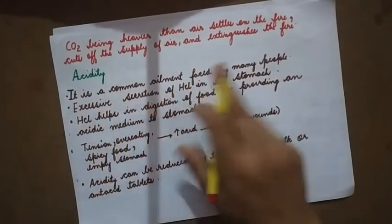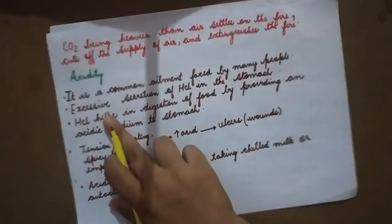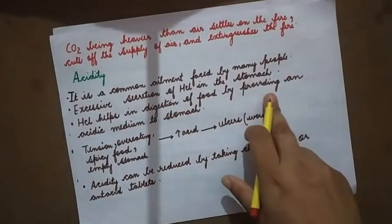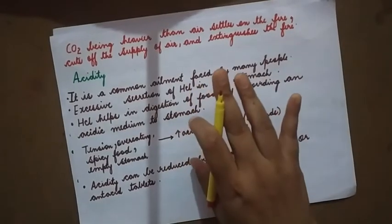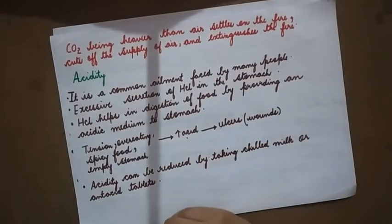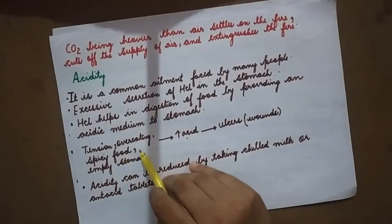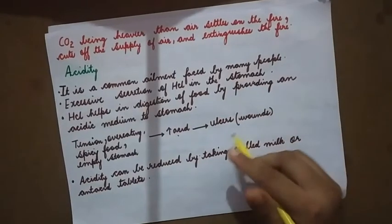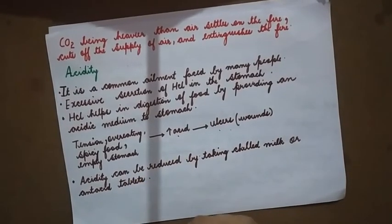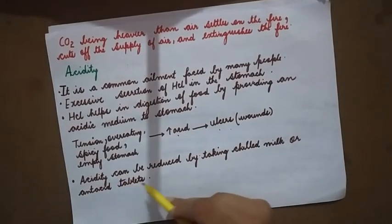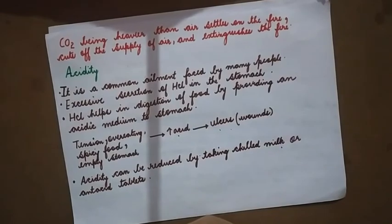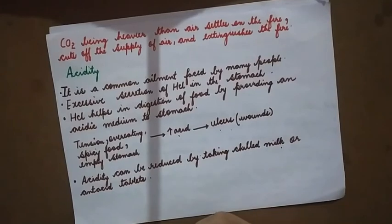Acidity is a very common problem found in many people. Excessive secretion of hydrochloric acid in the stomach causes acidity. HCl in normal amounts helps in the digestion of food by providing an acidic medium. Causes of increased acid production include tension, overeating, spicy food, or an empty stomach, which can result in ulcers. Acidity can be reduced by taking a base, such as chilled milk or antacid tablets, which neutralize the acid.